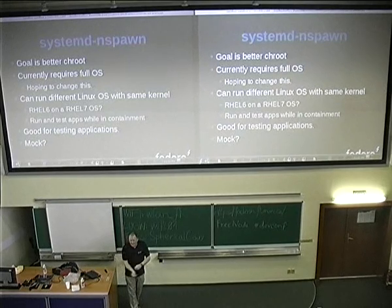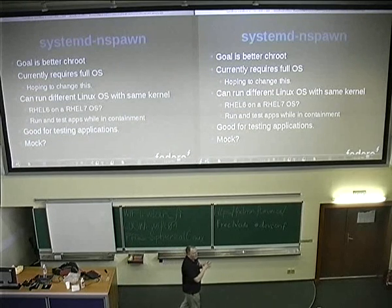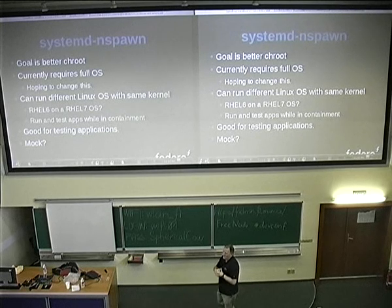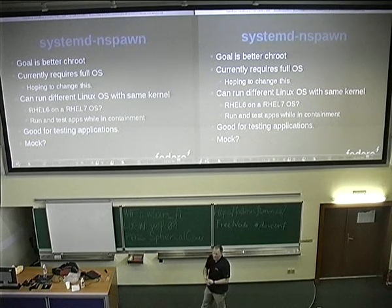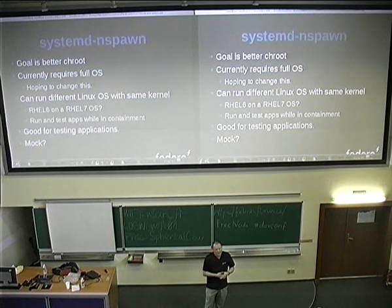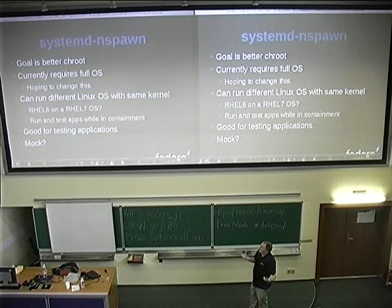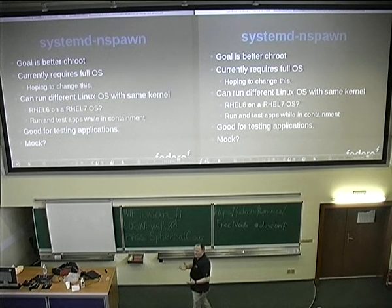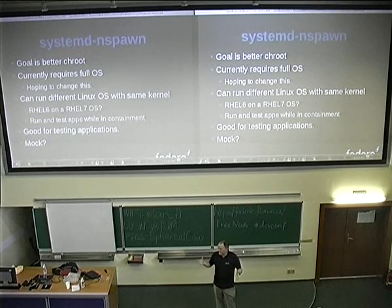The next container I'm going to talk about is called Systemd N-Spawn. N-Spawn is basically the ability to create a container. Its only real use right now is for fully installed operating systems. It requires you to install an operating system in a chroot — it's really kind of chroot on steroids. It has no SELinux tied to it yet, but it sets up pretty much full containers, and you can do really neat things with it.